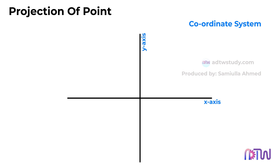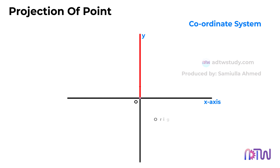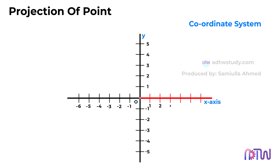The x-axis denotes the horizontal axis, while the y-axis represents the vertical axis, with their intersection defining the origin. In this two-dimensional view, the y-axis above the origin is deemed positive, while below the origin is considered negative. Similarly, the left side of the x-axis relative to the origin is negative, and the right side is positive.